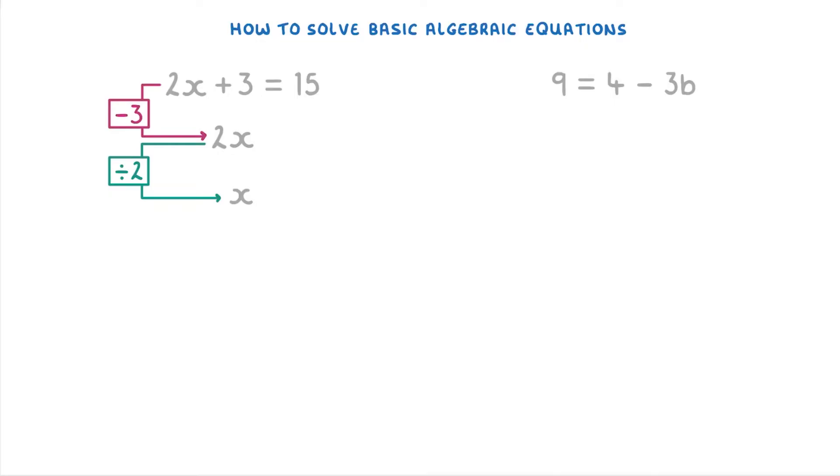But remember that whatever we do to one side of the equation we also have to do to the other side. So if we take away 3 from the other side we'll be left with 12 and if we divide by 2 we'll be left with 6. So x equals 6 will be our final answer.